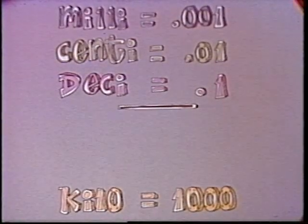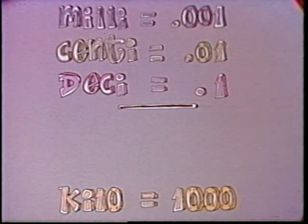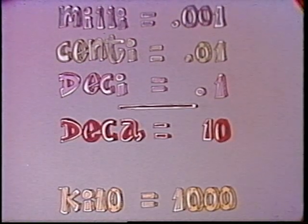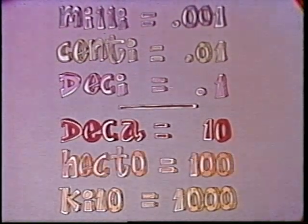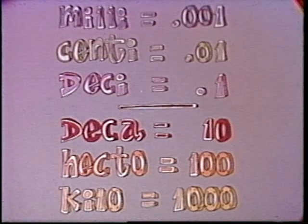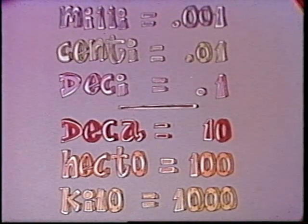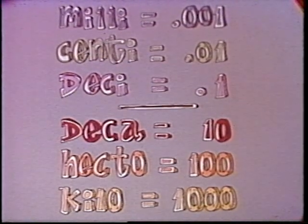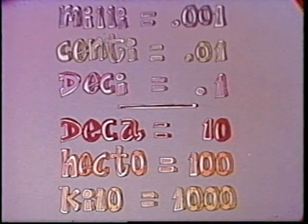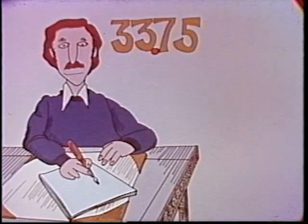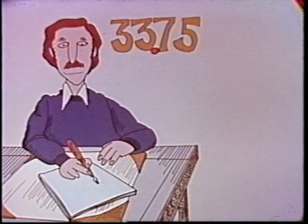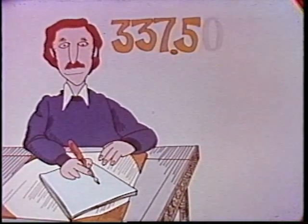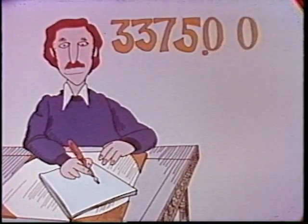In addition to mili, centi, deci, and kilo, there is deca, which means 10, and hecto, which means 100. By knowing these prefixes, you are halfway toward knowing the metric system. Now many calculations are merely a matter of moving the decimal point, not the pencil.